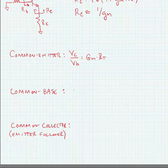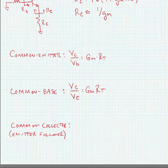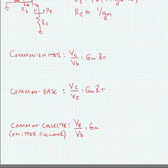The common base amplifier is one where we take our output on the collector and our input on the emitter — generalized form Gm times Rt. Finally, the common collector or emitter follower is one where we take our output on the emitter and our input on the base, also with generalized form Gm times Rt.